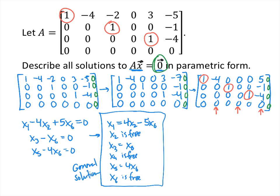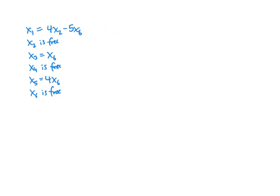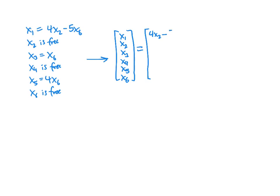If we want the parametric solution, we take this general solution and write it in the form of a vector. We're looking for the vector x that solves the original matrix equation. We have six variables, x1 through x6. Looking at our general solution and writing it in vector form, we get: 4x2 minus 5x6; x2 equals x2; x3 equals x6; x4 equals x4; x5 is 4x6; and x6 equals x6.